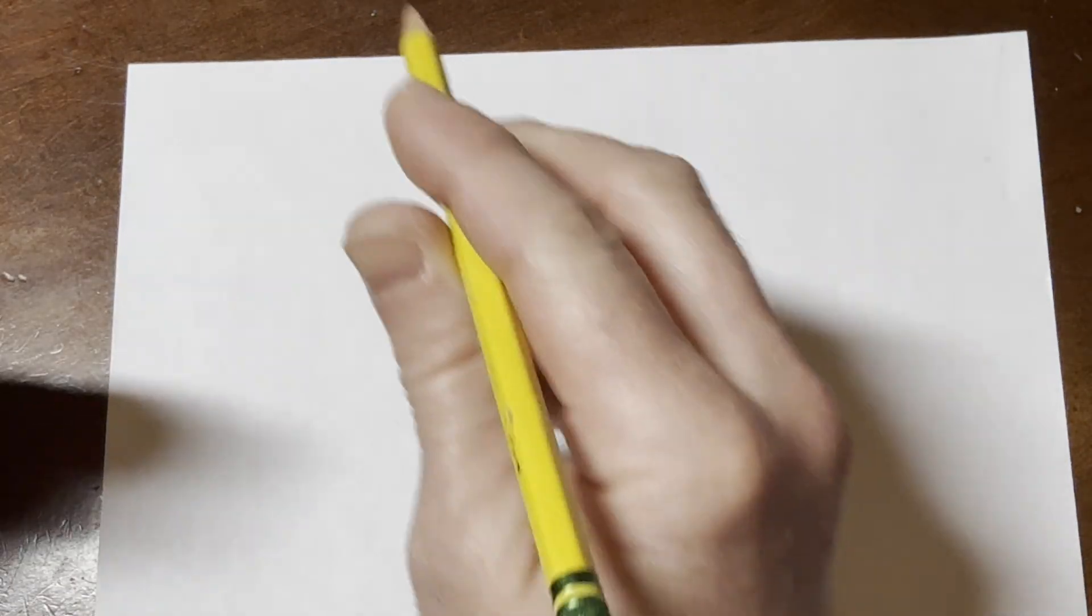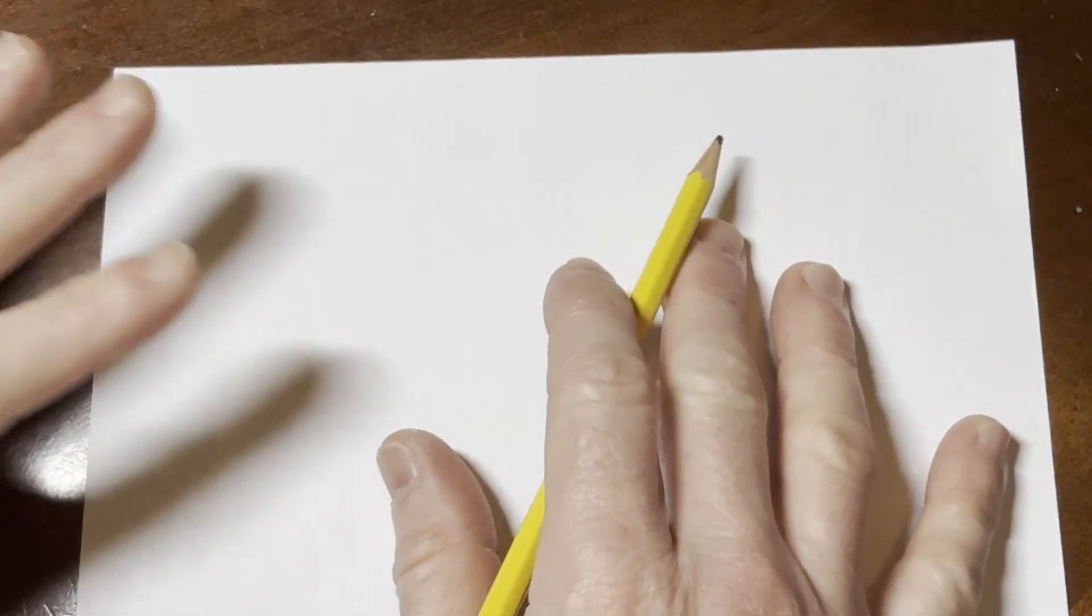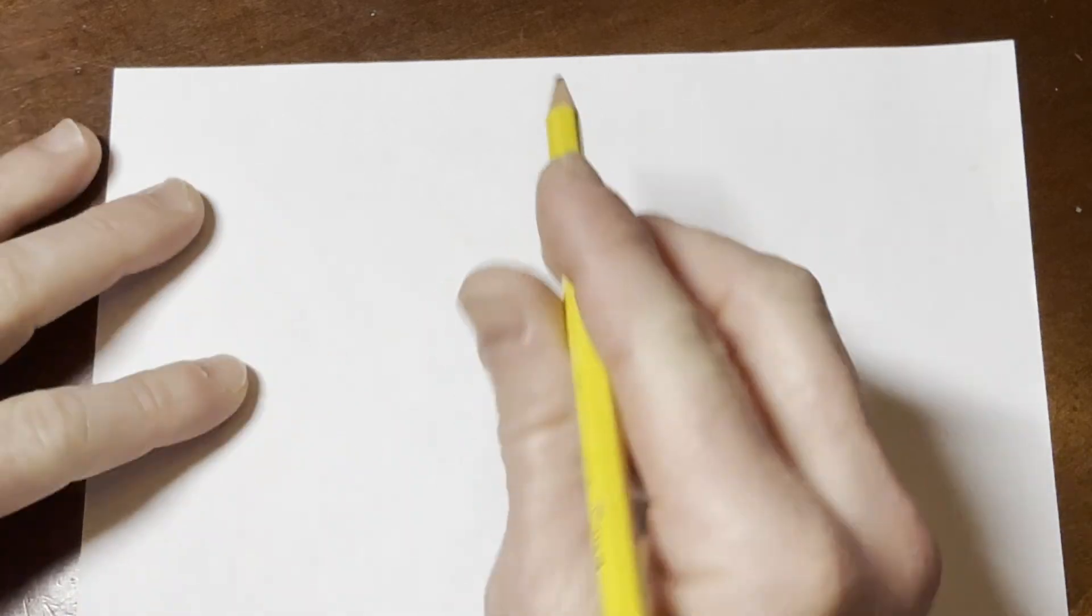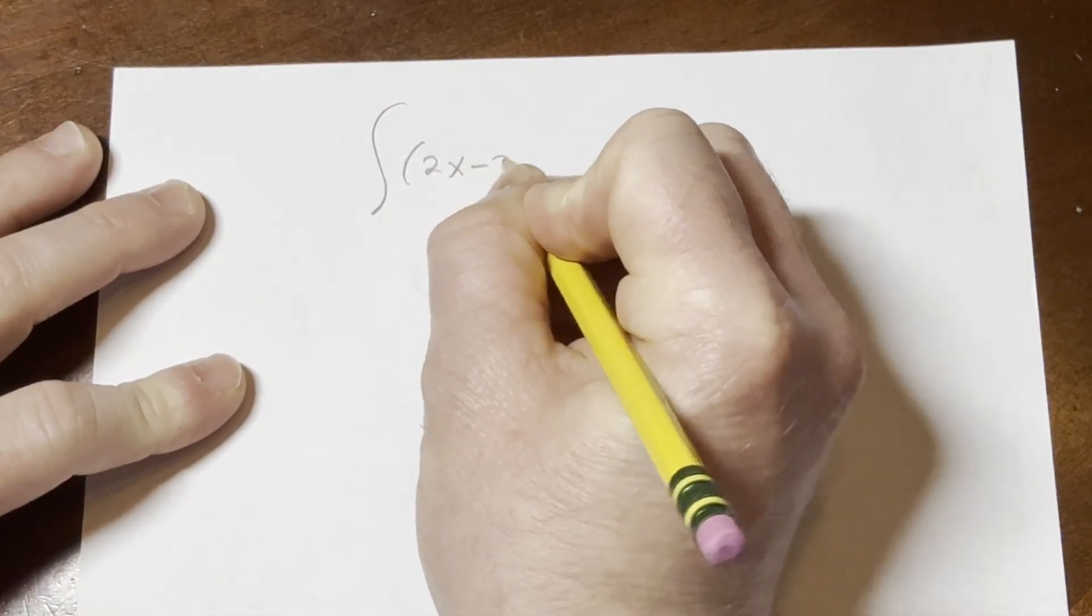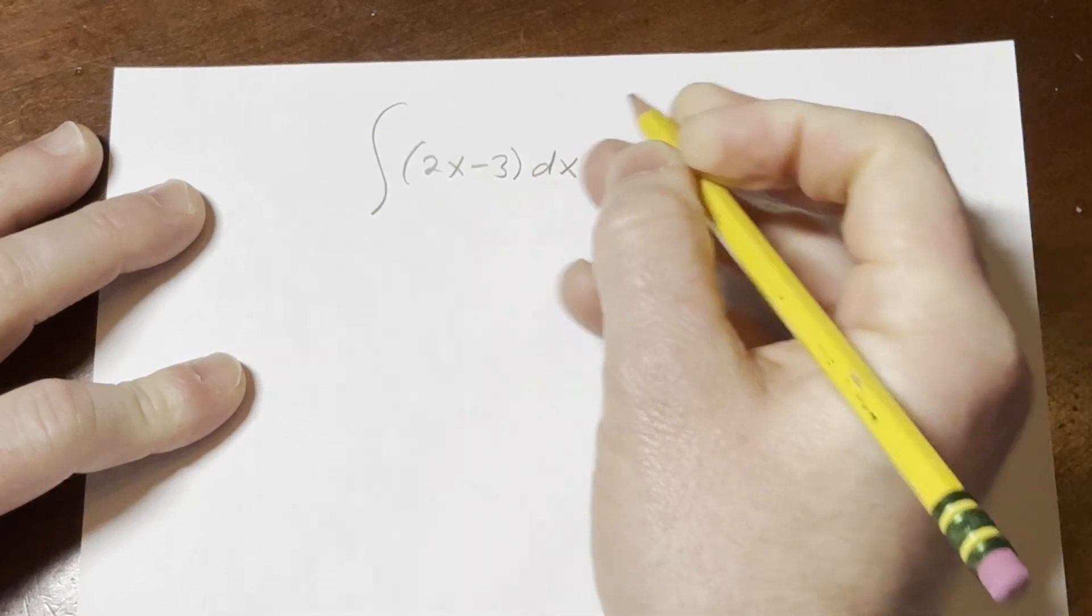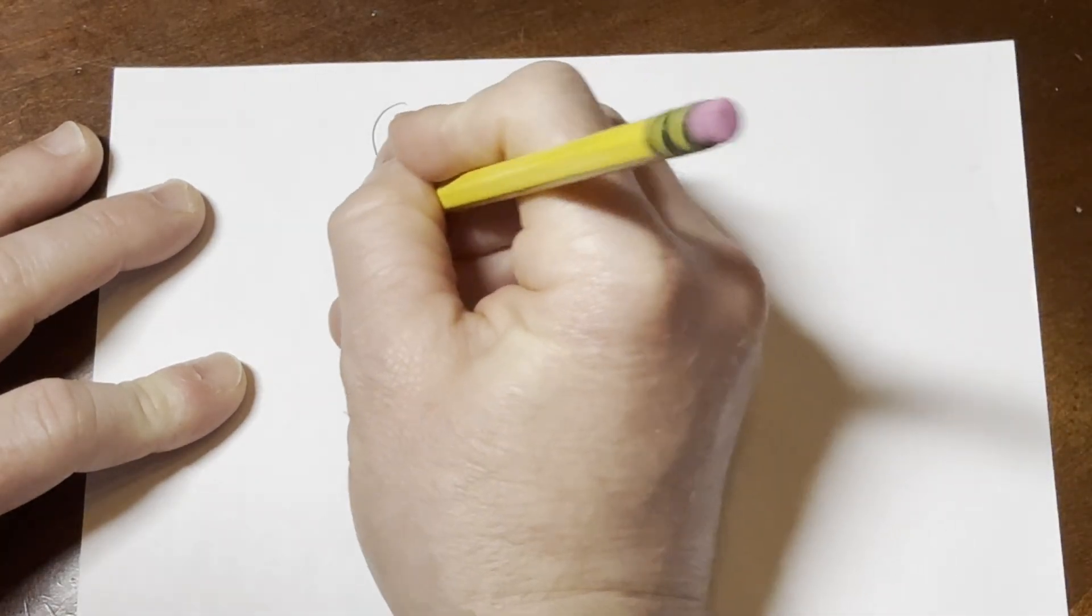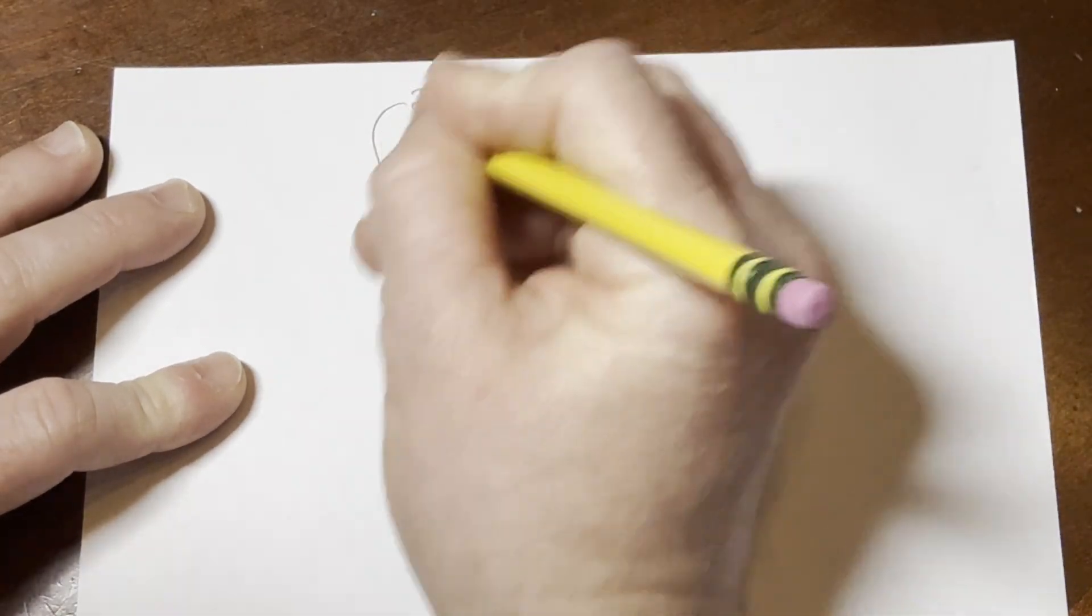Hi everyone, in this video we're going to do an example of a definite integral. So let's get right to it. We're going to integrate 2x minus 3 with respect to x from 0 to 2.